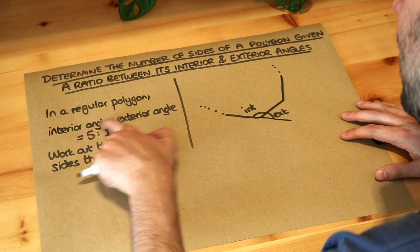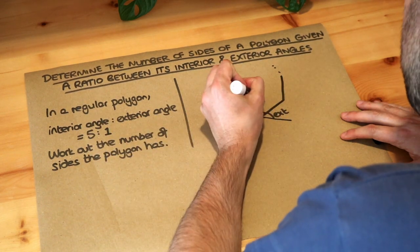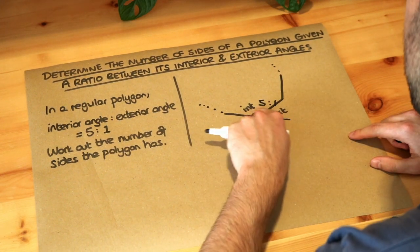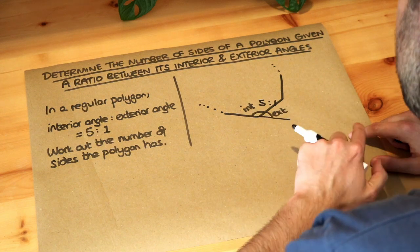Now we're told the ratio of interior to exterior angle is 5 to 1. But we know that the total angle here, interior plus exterior, is 180 degrees, so we look at the total number of parts.